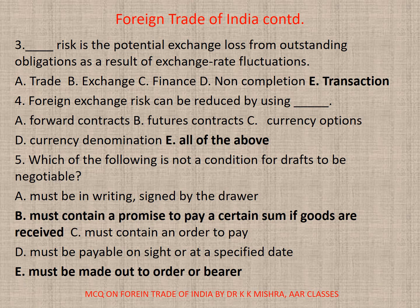Question 4: Foreign exchange risk can be reduced by using dash. Options: A. Forward contracts, B. Future contracts, C. Currency options, D. Currency denomination.